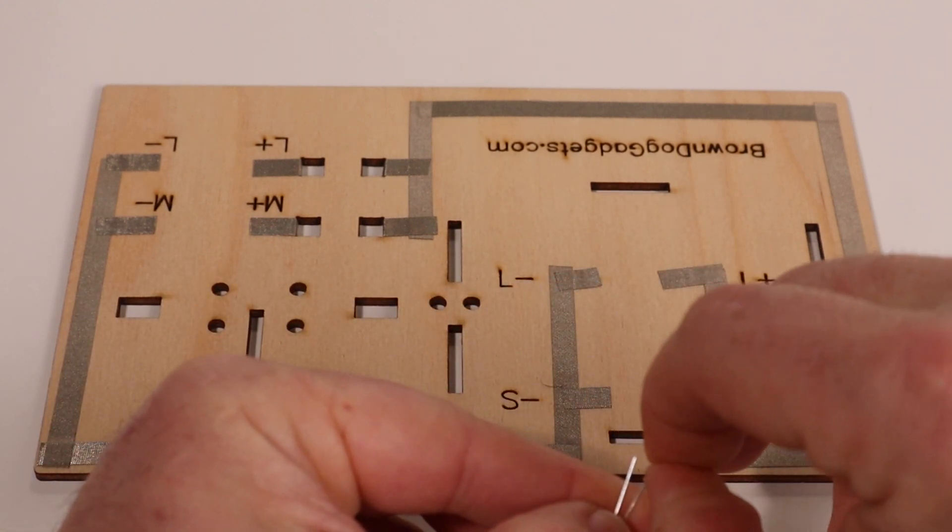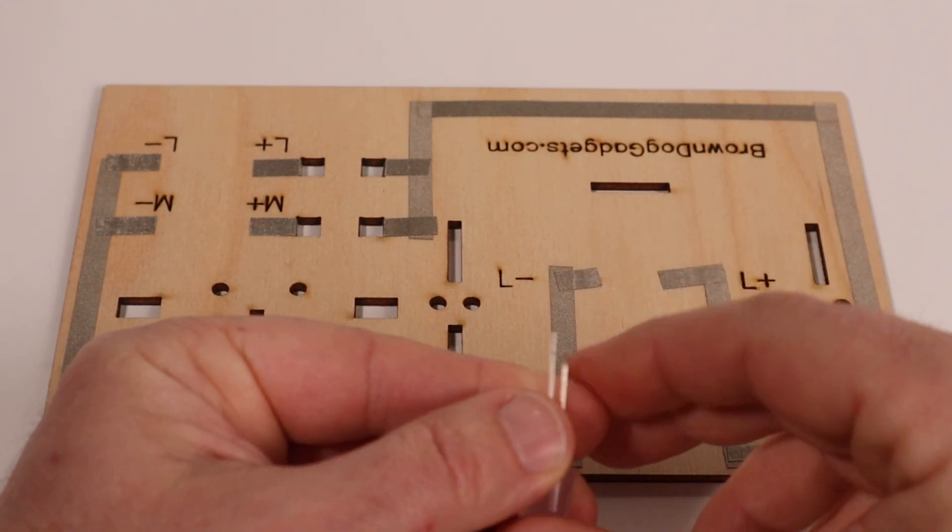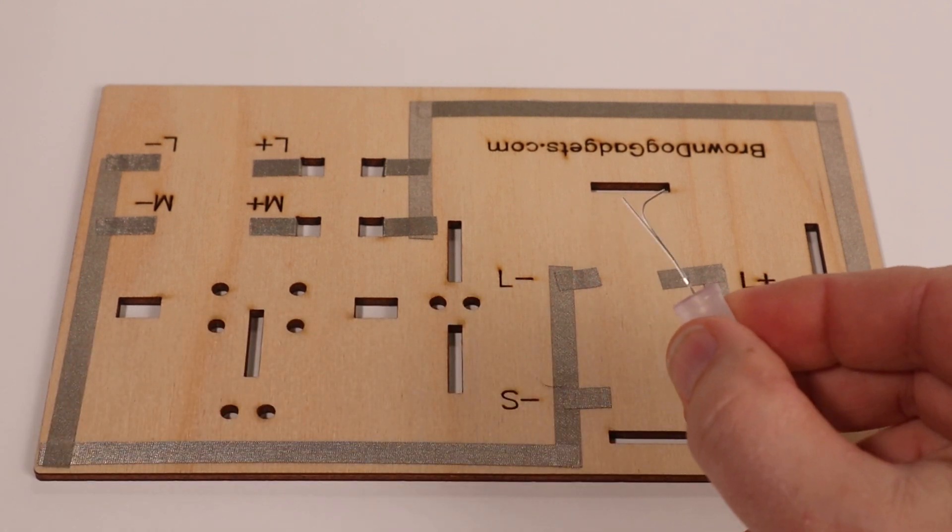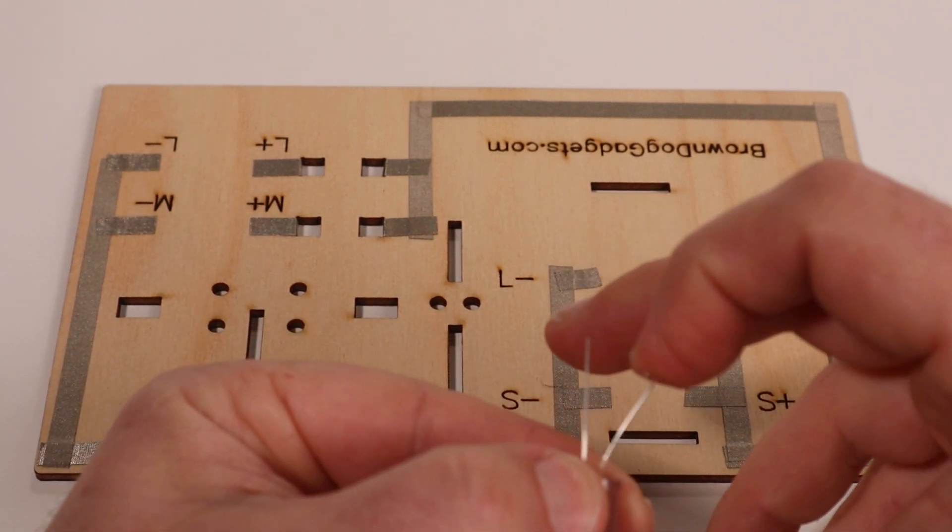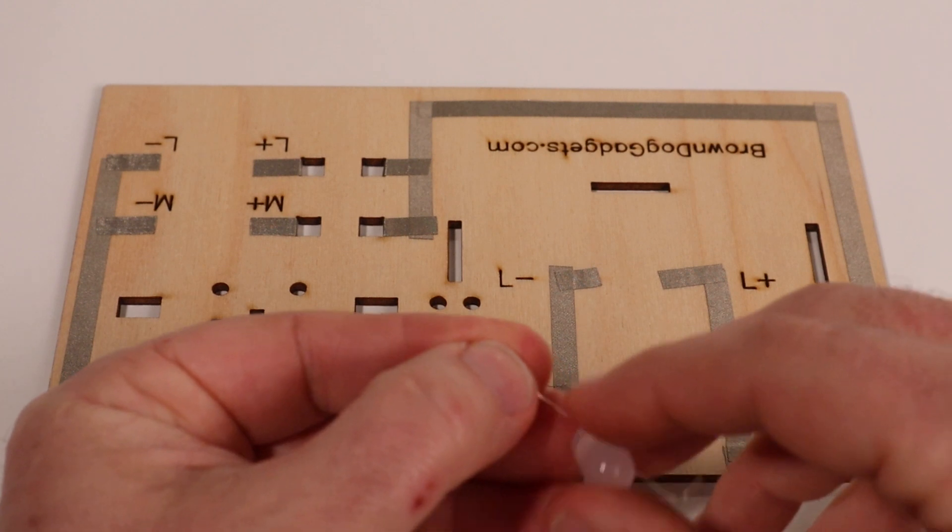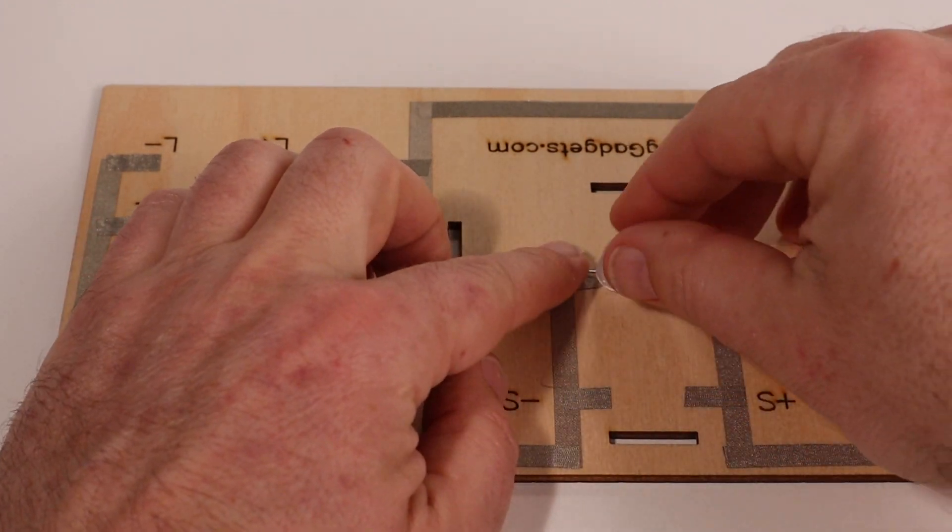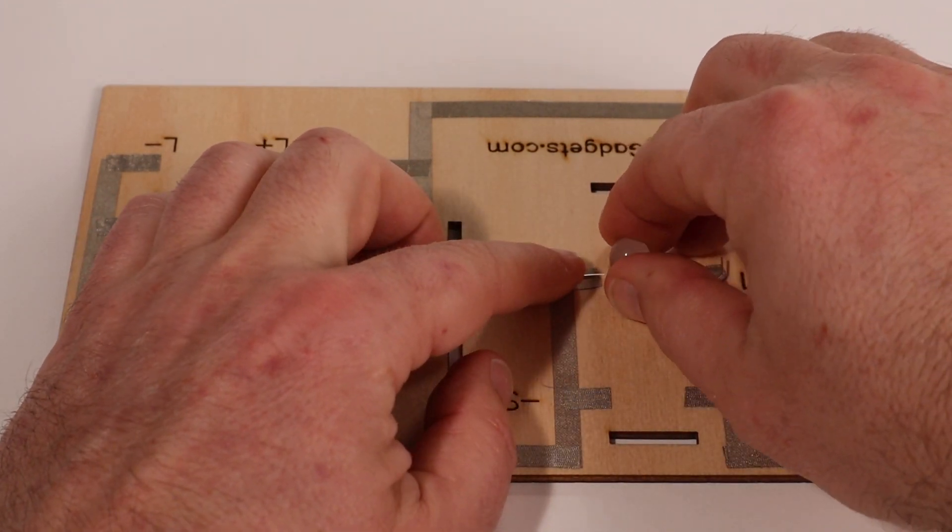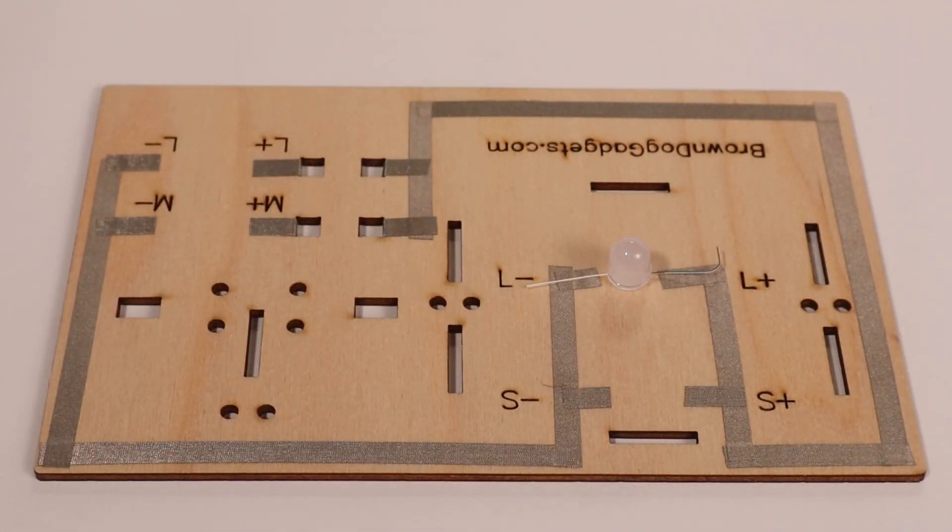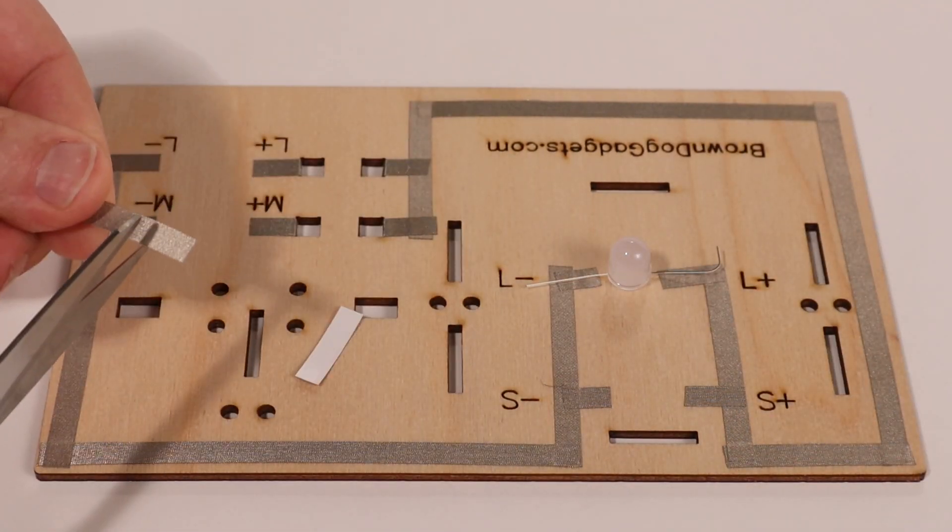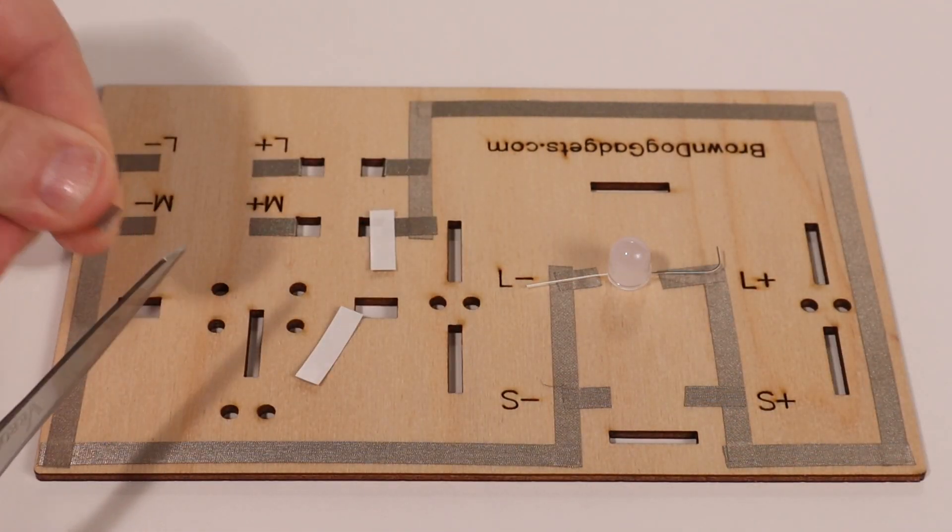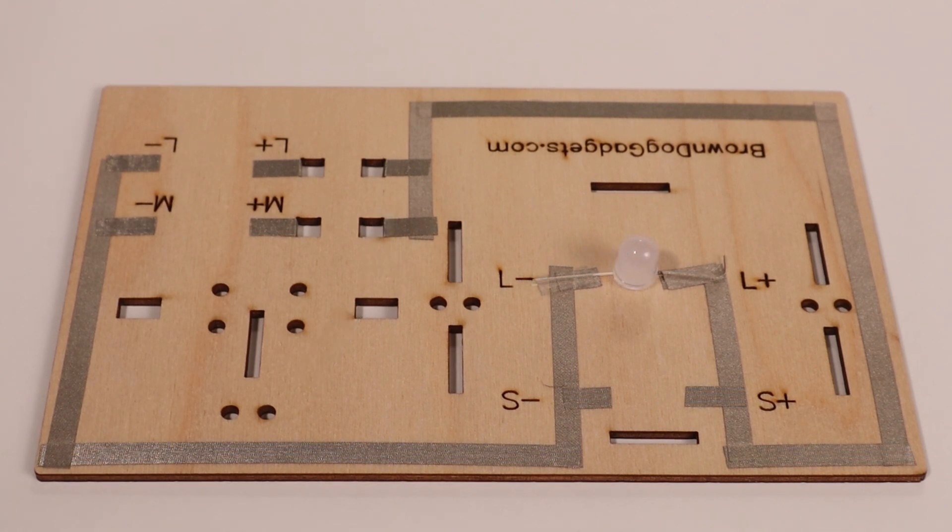Once the legs are spread apart, it can be difficult to tell one from the other. So one little trick we'll do sometimes is to make a small bend in the positive side. That way we know which is which. Then bend the legs apart, putting the longer one on the L plus and the shorter one on the L minus. Cut two pieces of maker tape and place them over the legs of the LED to connect it to the circuit.